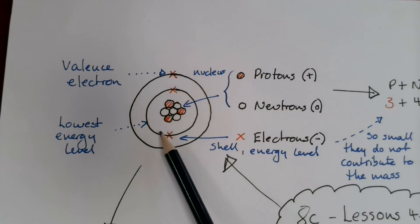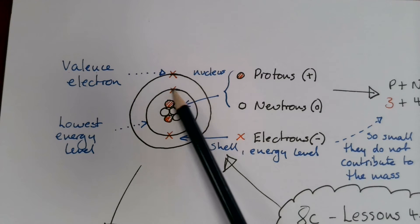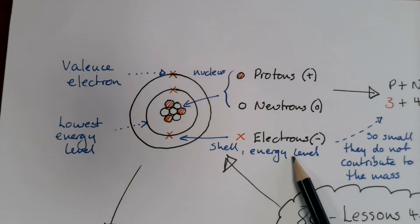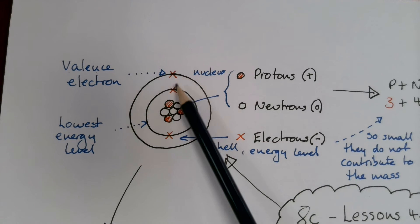Surrounding the nucleus we have what we call shells or energy levels, and we find the electrons in these energy levels.